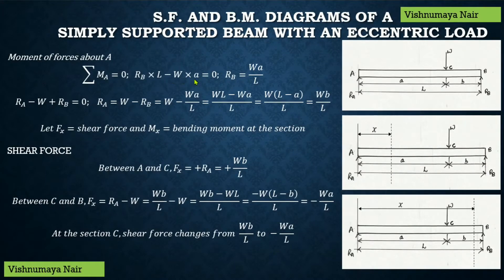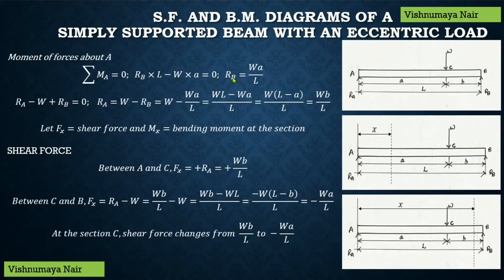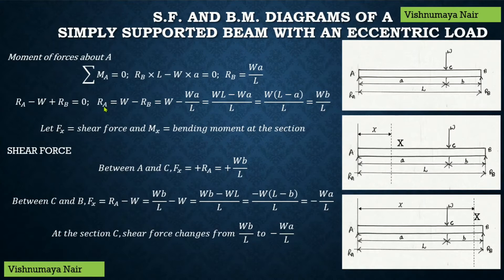Solving, RB = WA/L. Now considering force equilibrium, summation FY = 0 gives RA − W + RB = 0. Therefore, RA = W − RB = W − WA/L = (WL − WA)/L = W(L − A)/L. Since L − A = B, we get RA = WB/L. So the reactions are RA = WB/L and RB = WA/L.